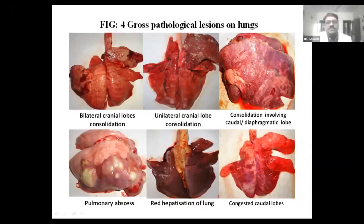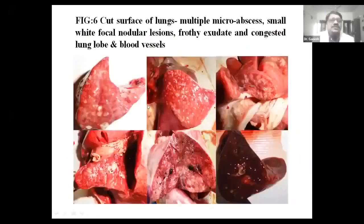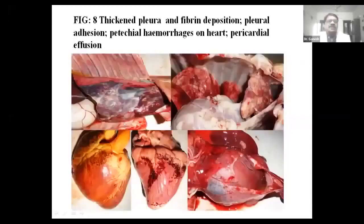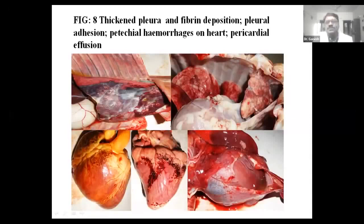Pulmonary abscesses are also found. Sometimes you will find red hepatization of lungs, and sometimes the entire lung will be congested. If you cut the lungs, you will find micro-abscesses and sometimes micro-nodules and white nodules. There is severe congestion and edema of the lung. You will also find lung pleura with adhesion between lungs, heart, and the thoracic cavity due to pleuritis. In septicemic cases along with pneumonia, you will find hemorrhages and also pericardial effusion or hydropericardium.